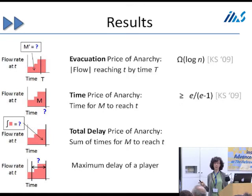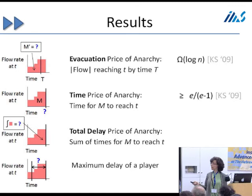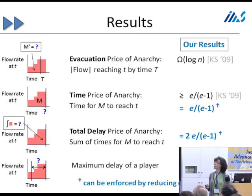There are some lower bounds on the price of anarchy. Koch and Scitella showed the evacuation price of anarchy has examples as bad as log n. For the time price of anarchy, there are examples as bad as e/(e−1). Mako, Larsen, and Steskal showed the maximum delay price of anarchy has examples as bad as Ω(n). What I'm going to talk about in this work is that in the middle two models we can get a constant price of anarchy if we reduce capacities. These are upper bounds on the price of anarchy, and there were no upper bounds before.